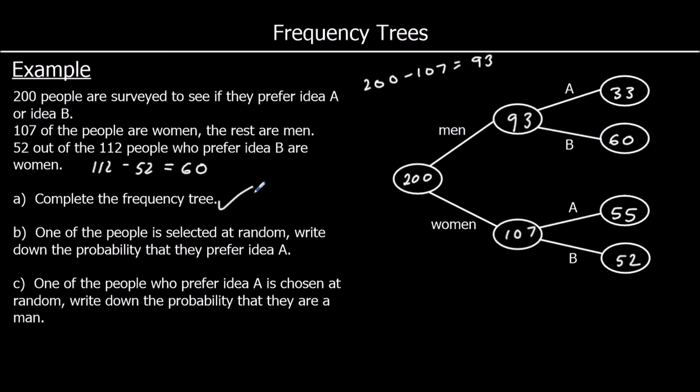Now it says one of the people is selected at random. Write down the probability they prefer idea A. So how many people prefer idea A? Idea A is 33 and 55, which is going to make 88. So what's the probability that someone prefers idea A? There's 88 people out of 200 in total. So it's going to be 88 out of 200. We don't have to simplify it. We could, but unless we're asked to, we don't have to simplify probability.